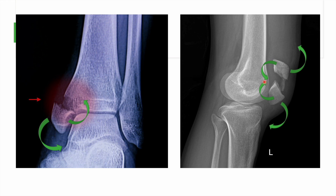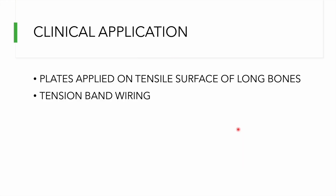Whenever a bone is subjected to a bending force, there is a centric surface close to the direction of bending and an eccentric surface away from it. The clinical application of the tension band principle is in the form of plate fixation — when any implant such as an LCP is placed on the tensile surface of a bone in a simple fracture, it acts as a tension band.